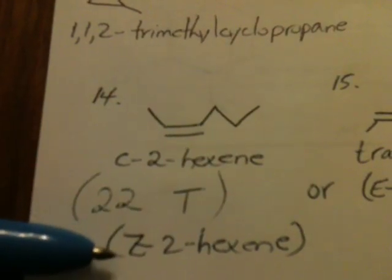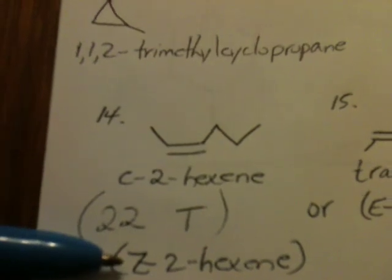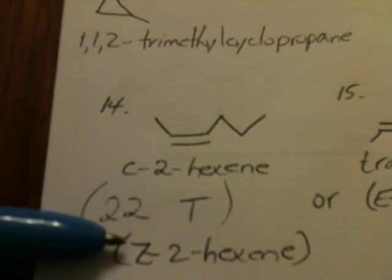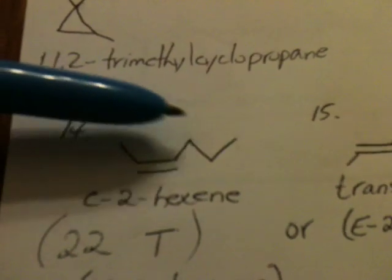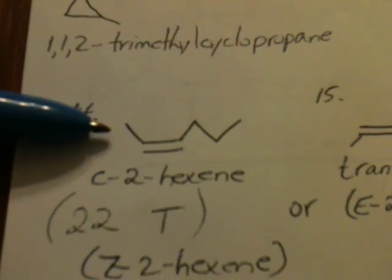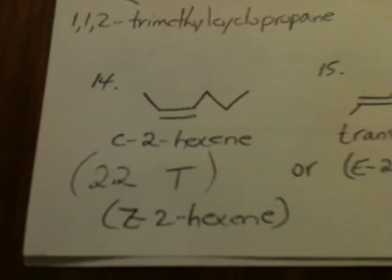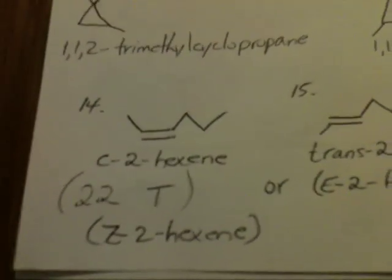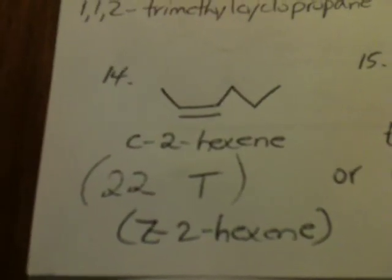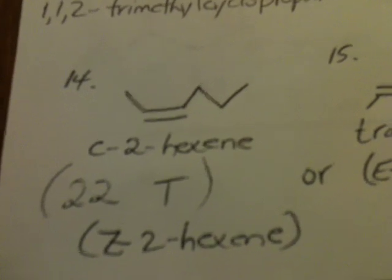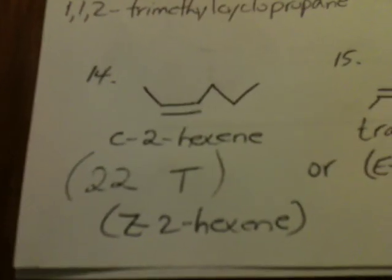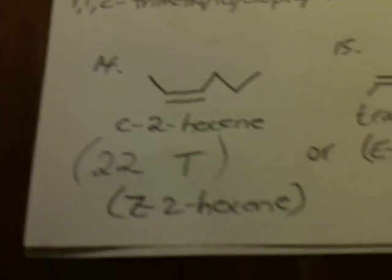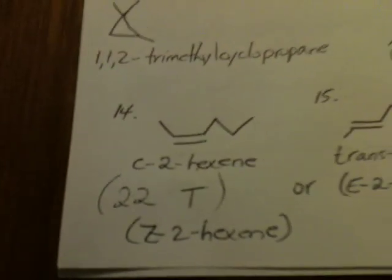Z stands for zusammen in German, which means together. So when the groups are on the same side of the double bond, the traditional way has been to refer to them as cis. And now the new IUPAC nomenclature calls for them to be named Z. I think the old system still is used, and it's still current, so it's good to know about both of them.